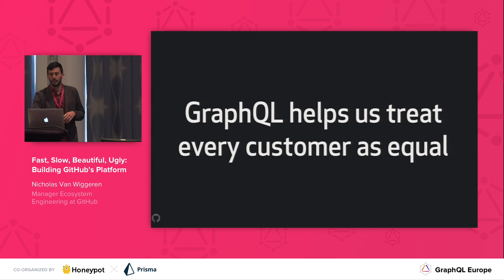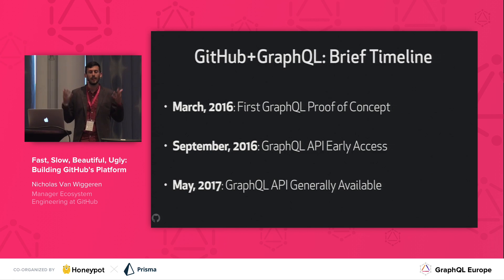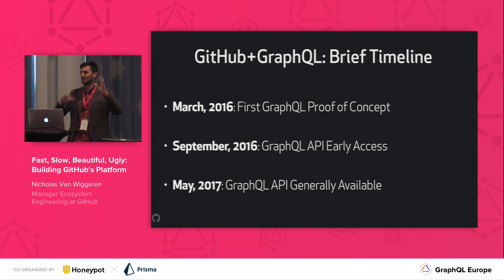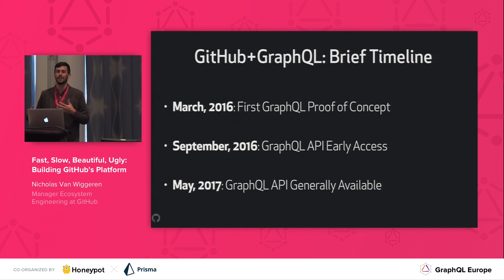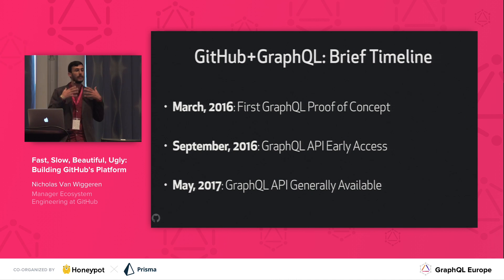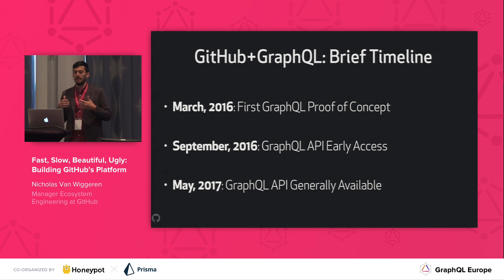Going into our GraphQL timeline: we were early adopters. In early 2016, we looked at our REST API, which at that point was about six years old — kind of bits and pieces bolted on. Every new feature came out with the REST API, sometimes right after we built the feature, sometimes six months after. We set out and said, what can we build to make sure we are building a platform and doing the best thing for our users and the people integrating against GitHub? We looked at OData, we looked at Falcor, we looked at GraphQL, and we loved the simplicity of the spec.